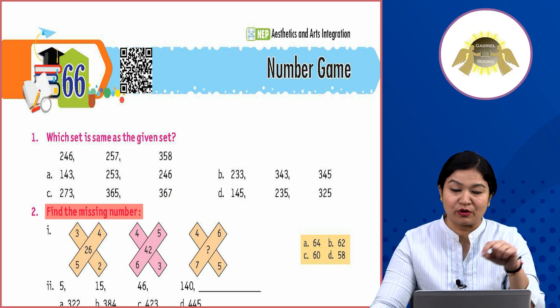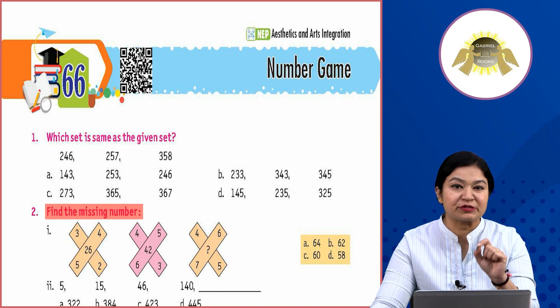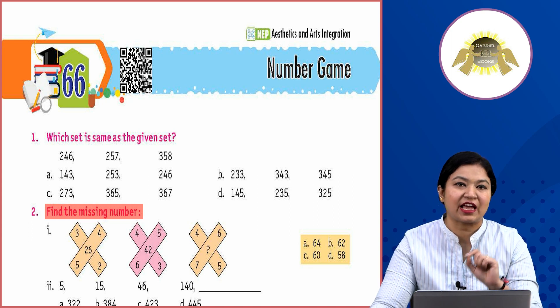Second part of the book: find the missing numbers. You have to look at the figures and identify which numbers are missing. Looking at the third figure, we need to find the pattern.